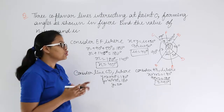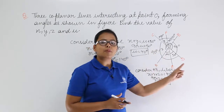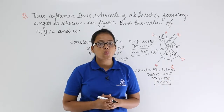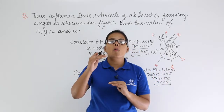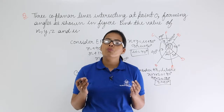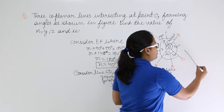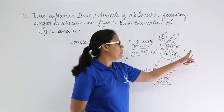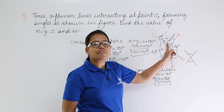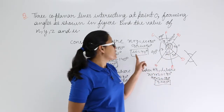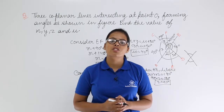To recap, we used two properties: first, angles subtended on a straight line always sum to 180 degrees; second, when two lines intersect, their vertically opposite angles are always equal. Using these two properties, we found x = 40°, y = 50°, z = 90°, and u = 40°. I will be taking more problems like this in the coming video lectures. Thank you.